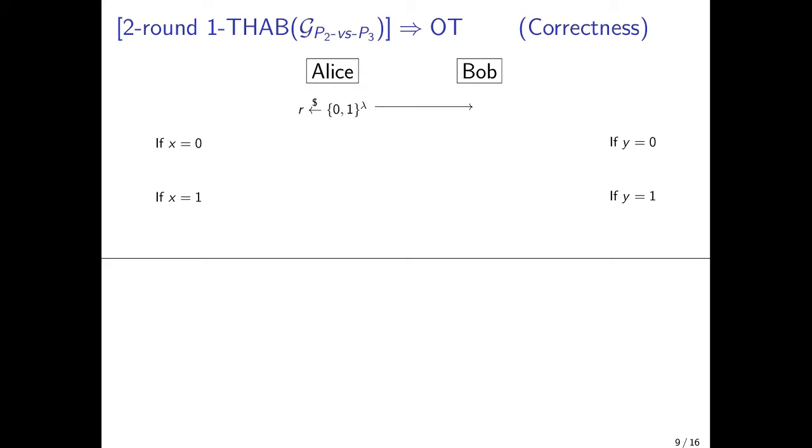In the first step, Alice samples a long random string and sends it to Bob. Then she's going to emulate virtual parties depending on her input, either one of them or two of them. And Bob does something similar. They're now going to connect their virtual parties on the line with Alice's nodes on the left and Bob's nodes on the right. And they're going to run the topology-hiding anonymous broadcast protocol on this path, having Alice's leftmost party always broadcast the long random string R.